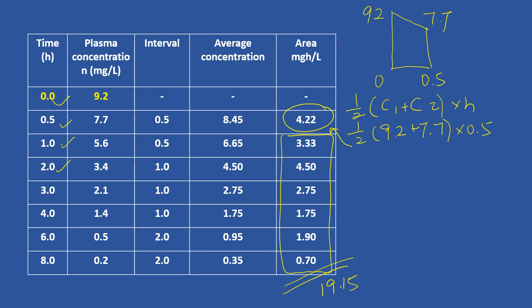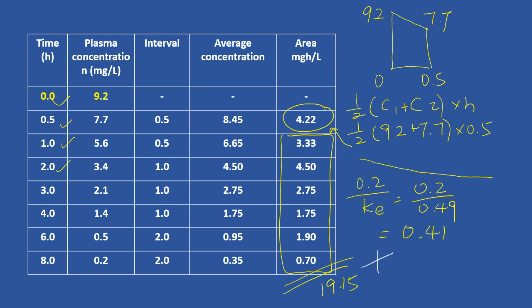Remember, the last concentration extends to infinity. To calculate the area for the last segment, use the last concentration divided by ke: 0.2 divided by 0.49, which equals 0.41. Adding this to 19.15, your total AUC is 19.56.